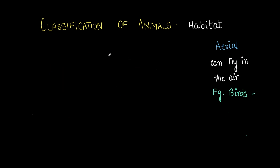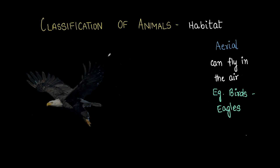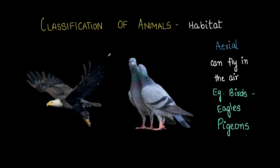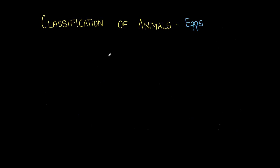Examples of aerial animals are basically birds — an eagle, a pigeon, crows, sparrows, mynas, whatever birds you can think of. Birds have feathers and wings.